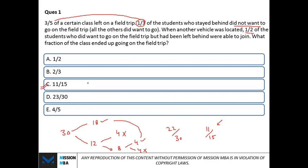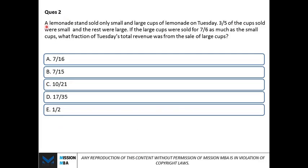Let's look at another example to make this clearer. We assumed thirty because we had five times three times two — every fraction was in a single chain. Now let's look at a different question where you'll have two separate chains.